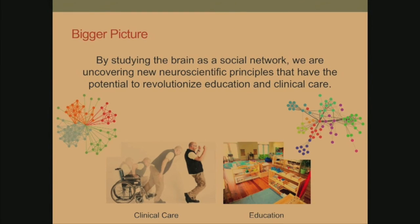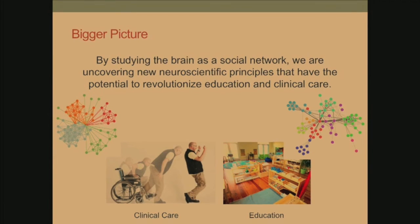The bigger picture question is: can we use these techniques of looking at the brain as a network to really change the face of society? We think the answer is yes in two different areas. One is in clinical care — if we can identify who is flexible and how to enhance flexibility, we could have a real impact on neurorehabilitation after stroke. In addition, if we could enhance flexibility in children, we may potentially be able to affect educational outcomes in schools. I'm very interested in how you would create an environment for a child that would not just enhance behavioral outcomes, but enhance neurophysiological changes to enable future learning. By combining educational theory and neuroscience, we're going to have a lot more power to impact childhood education in the future.